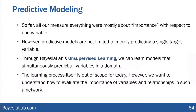So far, everything we talked about in terms of importance was with respect to a single target variable. But predictive models are not limited to predicting just a single target variable. For instance, using Bayesian Lab's unsupervised learning, we can learn models that simultaneously predict all variables in the domain. The learning process itself is out of scope for today; however, we want to understand how to evaluate the importance of variables and relationships in such a network.